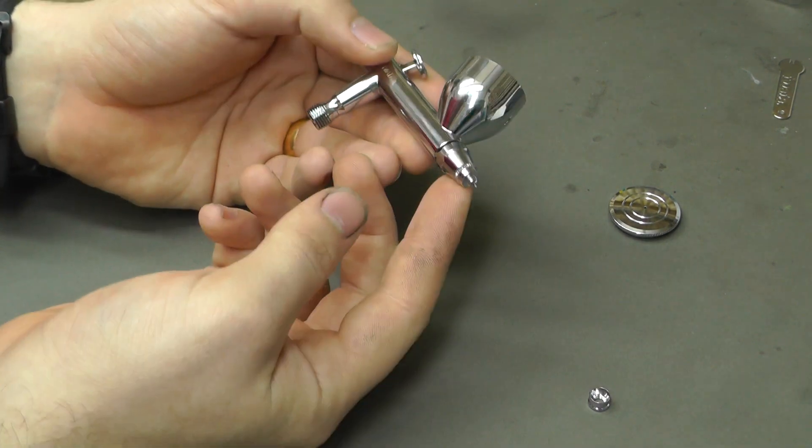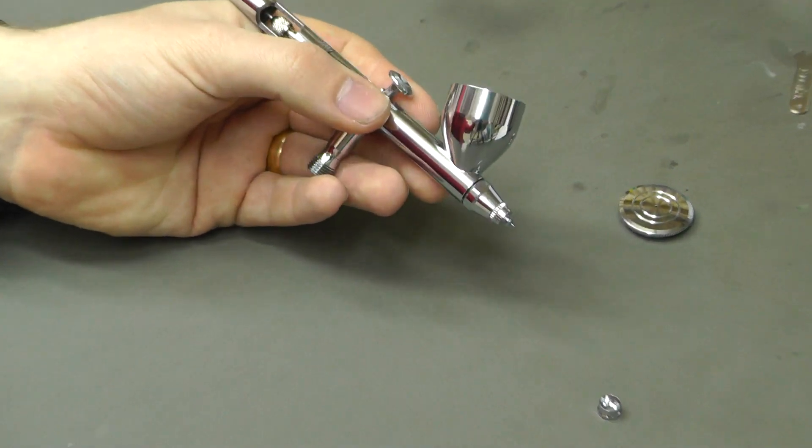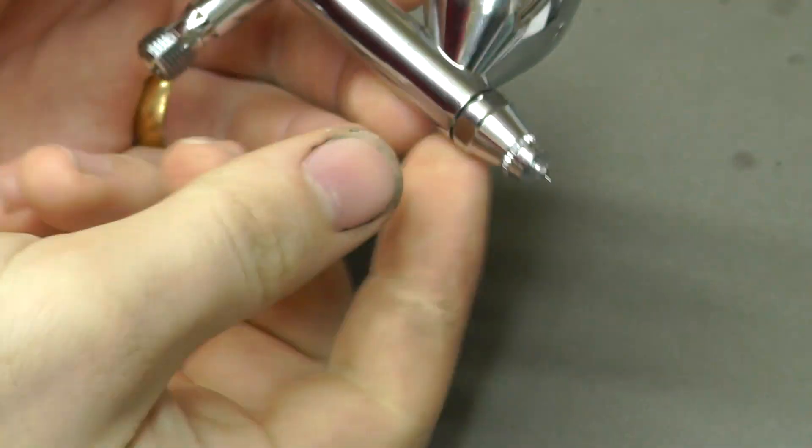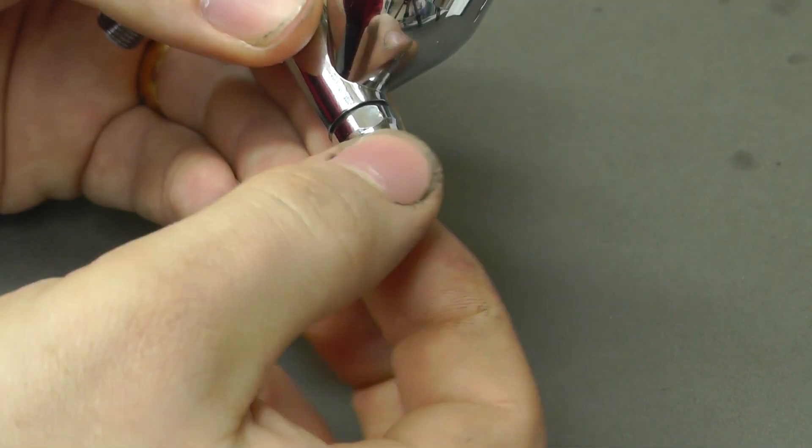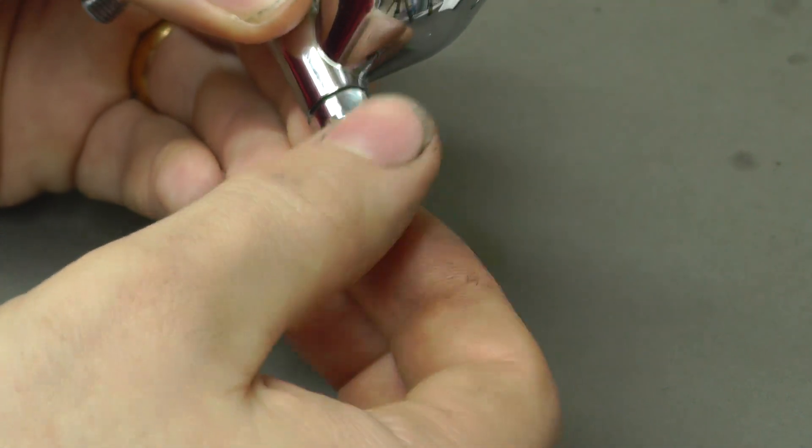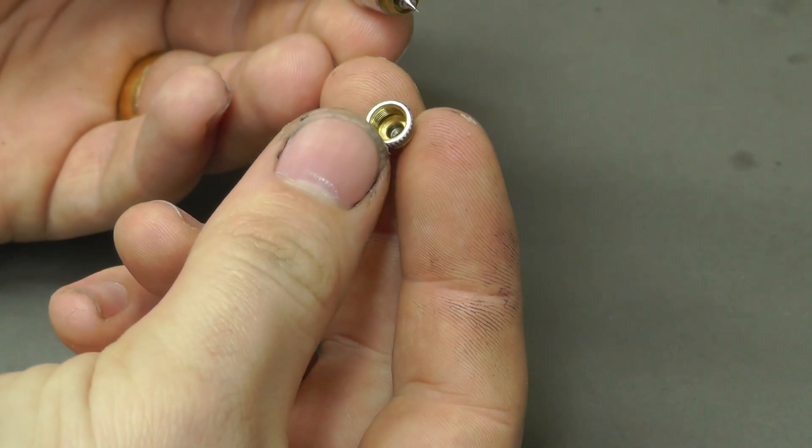Comes off nice and easy. As you can see, we've got this really tiny, tiny little needle here. So let's remove the rest of the nozzle. Nicely, easily screwed off, as you can see, just there. Nicely screws off.